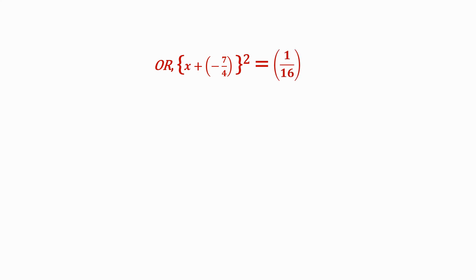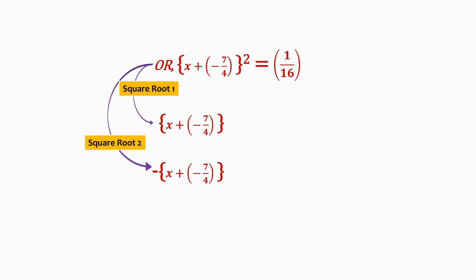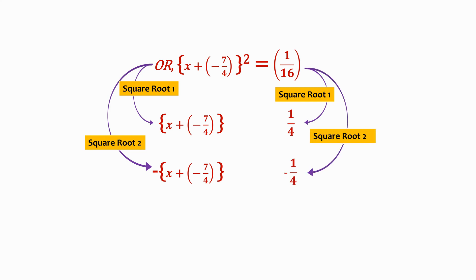Now we have (x + (-7/4))² = 1/16. We know the square roots of the LHS will be x + (-7/4) and -(x + (-7/4)), and the square roots of 1/16 are 1/4 and -1/4. But we'll equate both the negative and positive roots of one side of the equation to only one root of the other side of the equation.